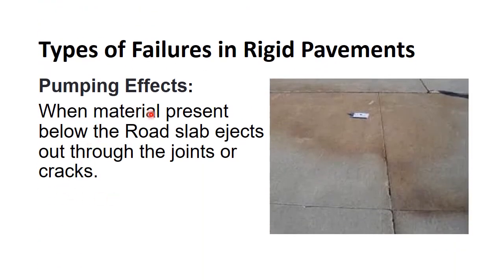Pumping occurs when material present below the road slab is ejected out through the joints or cracks. When soil slurry comes out it is called mud pumping. The main causes are infiltration of water through joints, cracks, or edges of the pavement forming soil slurry, poor joint sealer allowing water infiltration, and repeated wheel loading causing erosion of underlying materials.